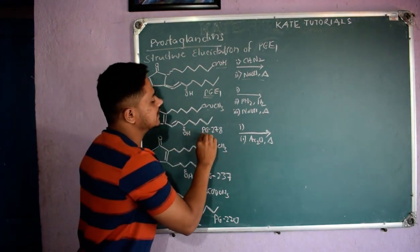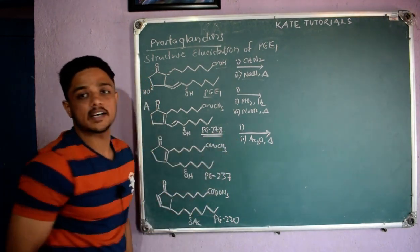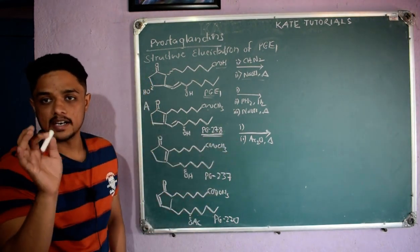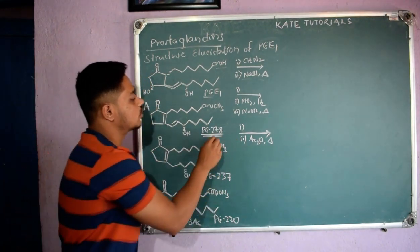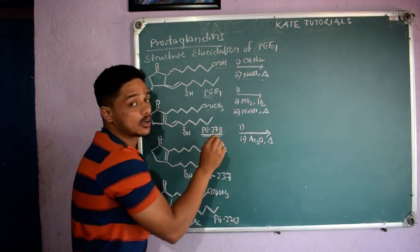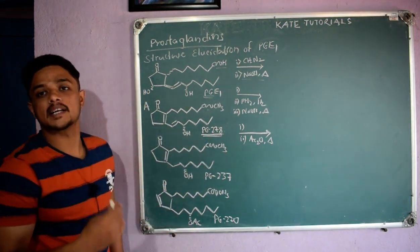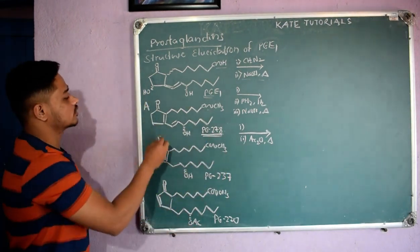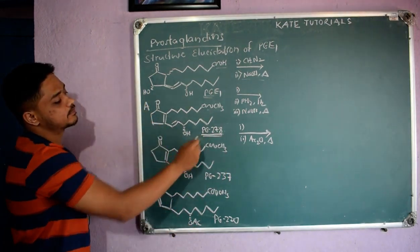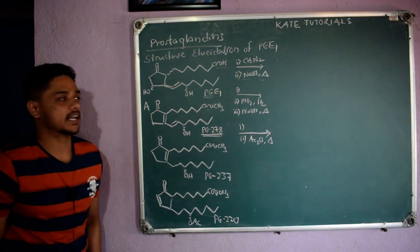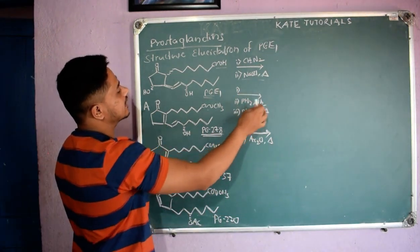With this first reaction I get compound A, and the name of this compound is PG278. What is 278? When UV spectroscopy was done, at 278 nanometers this compound absorbed the radiation. So this is compound A, that is PG278.